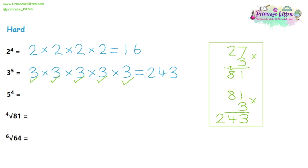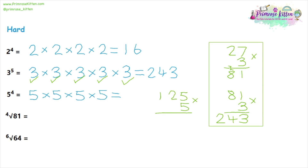Question three: five to the power of four means four fives all multiplied together. Do one step at a time: five times five is 25, then 25 times five is 125. Then we need 125 times five — using a written method: five times five is 25, carry the two; five times two is 10 plus two carried is 12; five times one is five plus one carried is six. That gives an answer of 625.